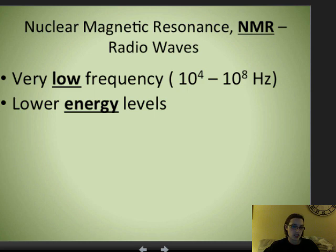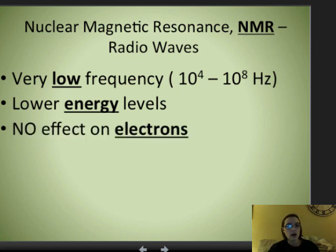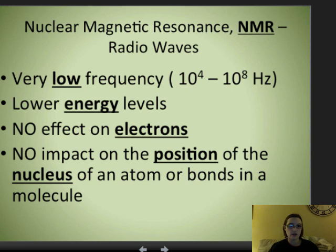However, the electrons that are inside the atom, or inside the molecule, need more energy than this to move around, so NMR actually has no impact or no effect on the electrons that are in a molecule. It also has no impact on the nucleus of an atom or on bonds in a molecule. So if NMR is not moving the electrons and it's not impacting the bonds, then what is it doing?